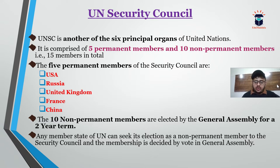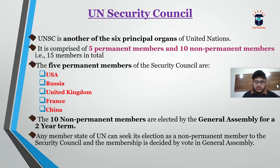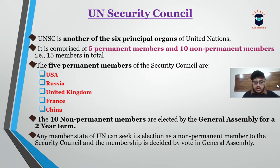The ten non-permanent members are elected for a two-year term through a vote in the General Assembly. Any country that is a member of the United Nations can become a non-permanent member for a period of two years by seeking membership, which is decided by election in the General Assembly. If a member country secures the necessary majority, it becomes a non-permanent member of the UNSC for a two-year term.